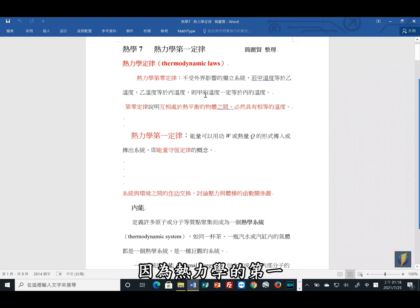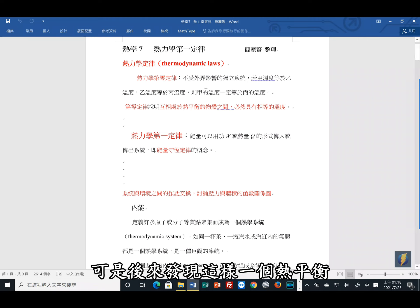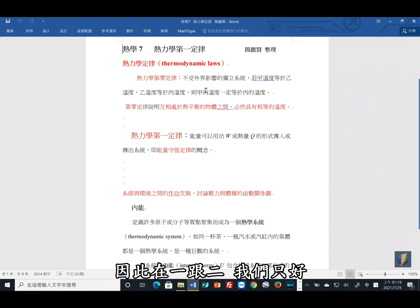为什么会是热力学第零呢?因为热力学的第一、第二定律是比较早的时候就把它定下来了。可是后来发现这样的一个热平衡,其实是热力学非常重要的概念。因此在一跟二,我们只好编号为第零,零更是热力学的重点。第零定律说明互相处于热平衡的物体之间,必然有相等的温度。